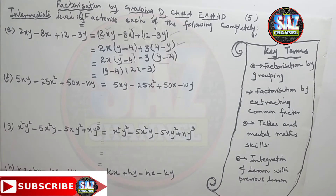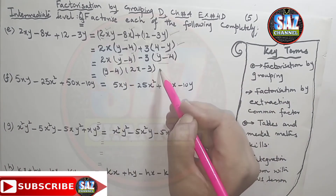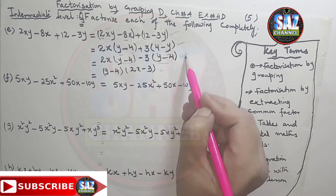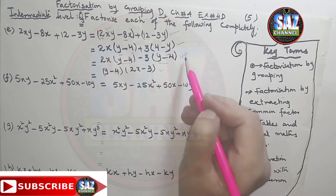Extract the common group out. The common group is (y minus 4) into (2x minus 3). This is a really important step — you have to focus on it.